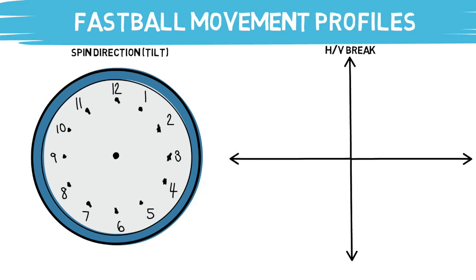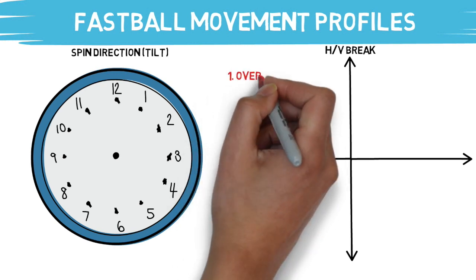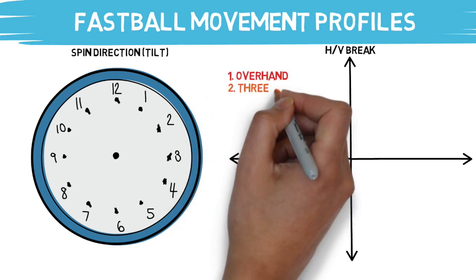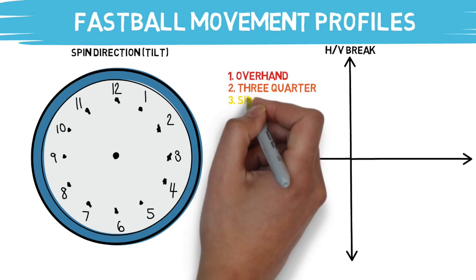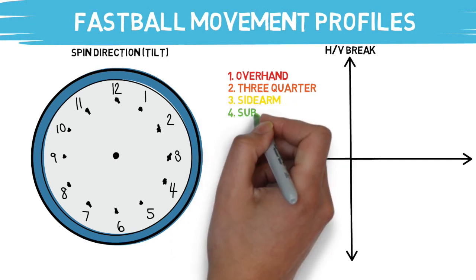The single leading factor in movement profiles of fastballs is going to be that pitcher's arm slot. To oversimplify this idea, we will break down pitchers into four different arm slot categories: overhand, three-quarter, sidearm, and submarine.